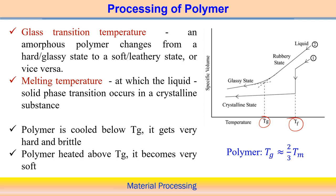Glass transition temperature Tg is basically associated with amorphous polymers — it represents the change from a hard or glassy state to a soft or leathery state, or vice versa. Melting temperature, on the other hand, is associated with the change of phase from liquid to solid and is associated with crystalline material. When a crystalline material in solid form changes to liquid phase, that particular temperature is known as the melting point temperature.